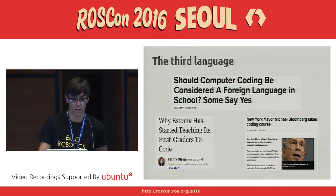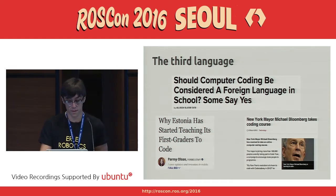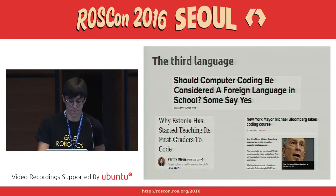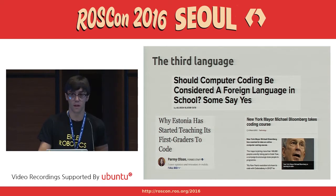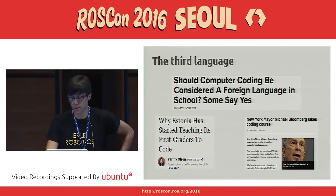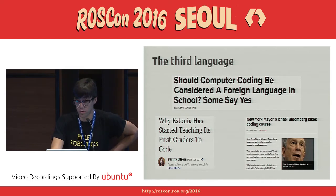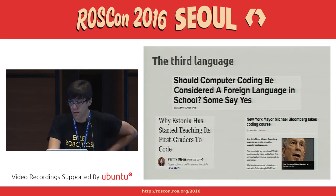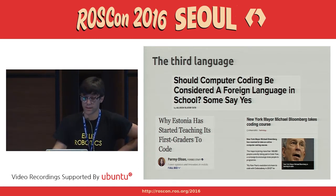For example, in Spain we normally learn English as one of the first foreign languages, and in other countries the third language is normally French or German. But nowadays, it makes sense that learning a new digital language — like a programming language — is just as important. Increasingly, people are starting to recognize the importance of learning how to code. For example, the New York mayor was taking coding classes, and the Estonian government has started teaching first graders how to code.